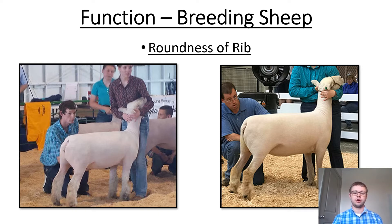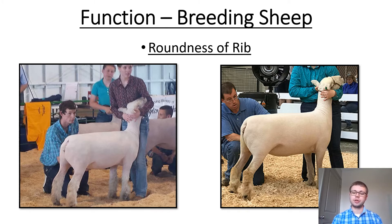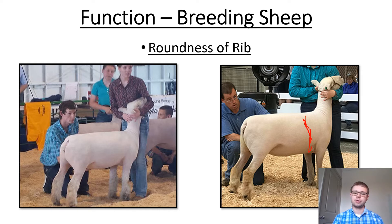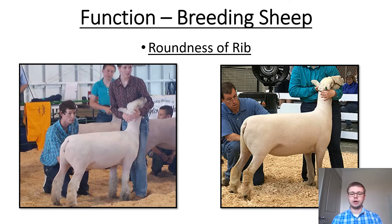The sheep on the far right has plenty of depth of body, but studying her right behind her shoulder down to the bottom of her rib cage, there just isn't as much curve there. Coming back to her last rib and out through her hip and down to the base of her skeleton, she doesn't have that natural internal dimension or volume. We still want fleshing ability, but more importantly we want that roundness of rib that is so desired within the sheep industry.